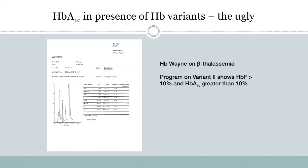A1c in the presence of hemoglobin Wayne — the ugly. We published a paper on this in Diabetes Care and wanted to call it 'Welcome to Wayne's World,' but weren't permitted that title. Wayne is really difficult to pick up. It shows a hemoglobin F-like band because Wayne 1 co-elutes with hemoglobin F, and Wayne 2 co-elutes with hemoglobin A1c. This creates significant challenges in detecting this variant, although the D-100 is set to pick it up — even if it cannot specifically identify it as hemoglobin Wayne.